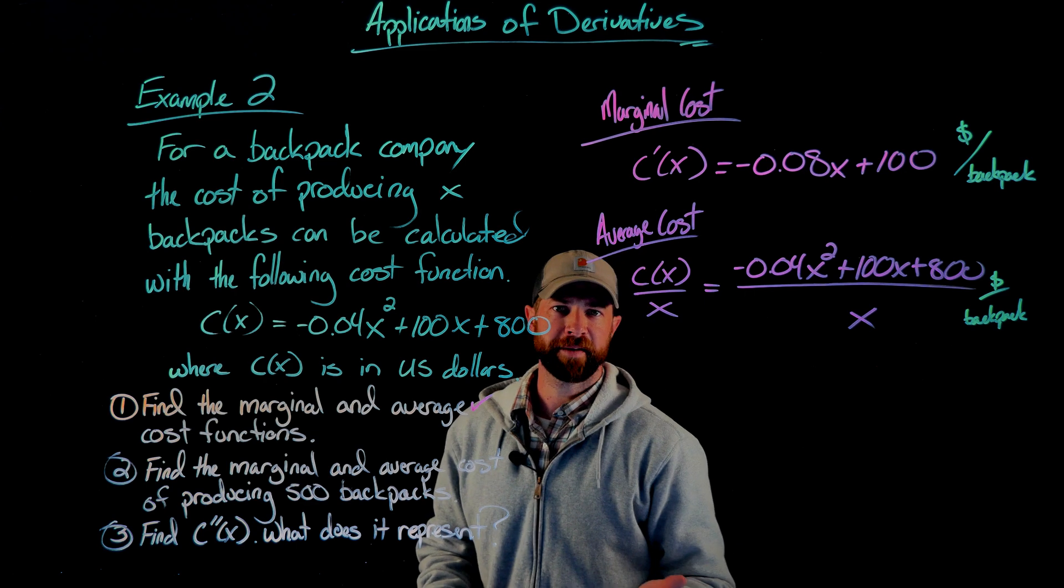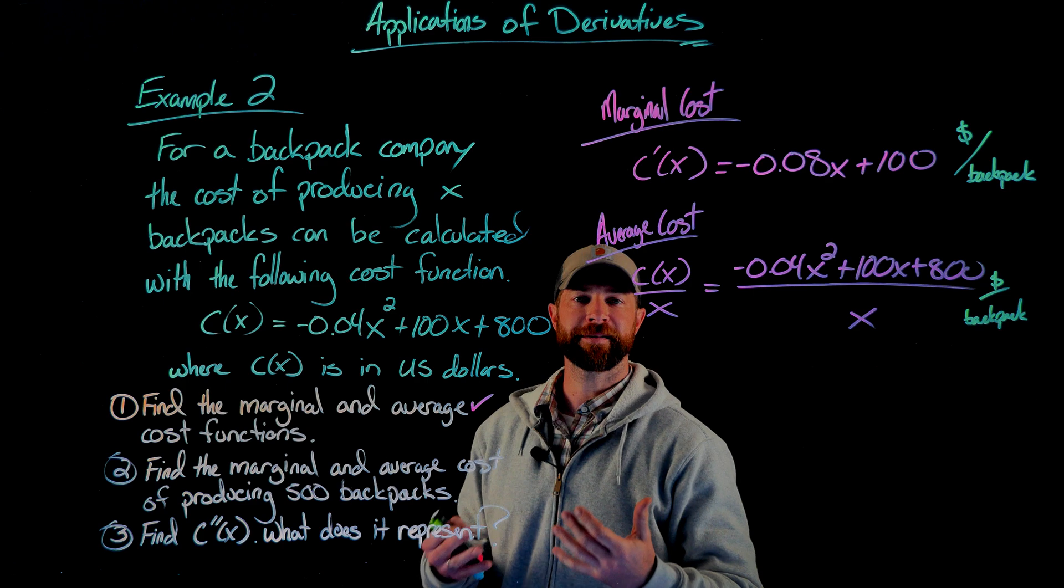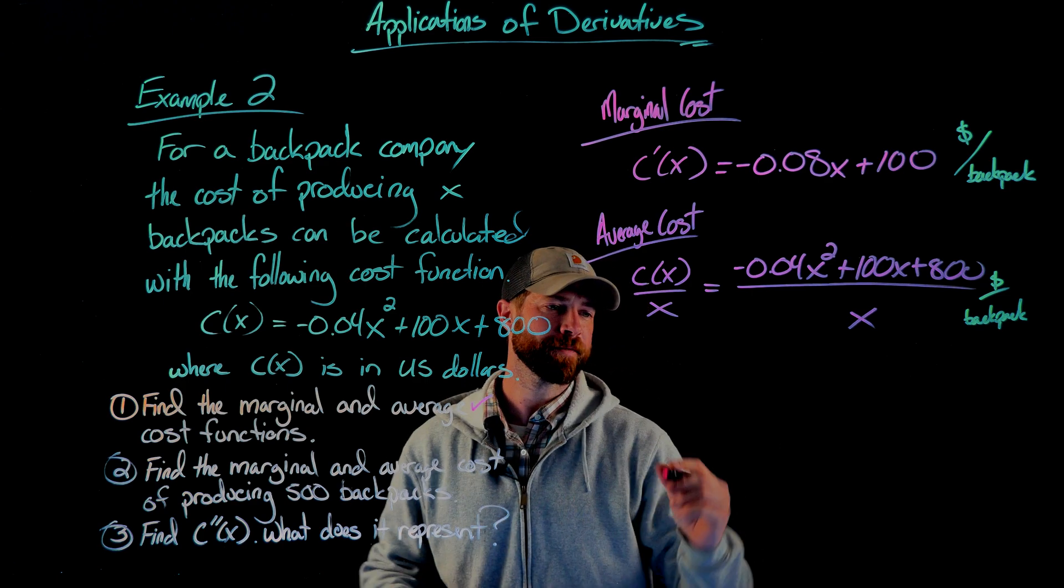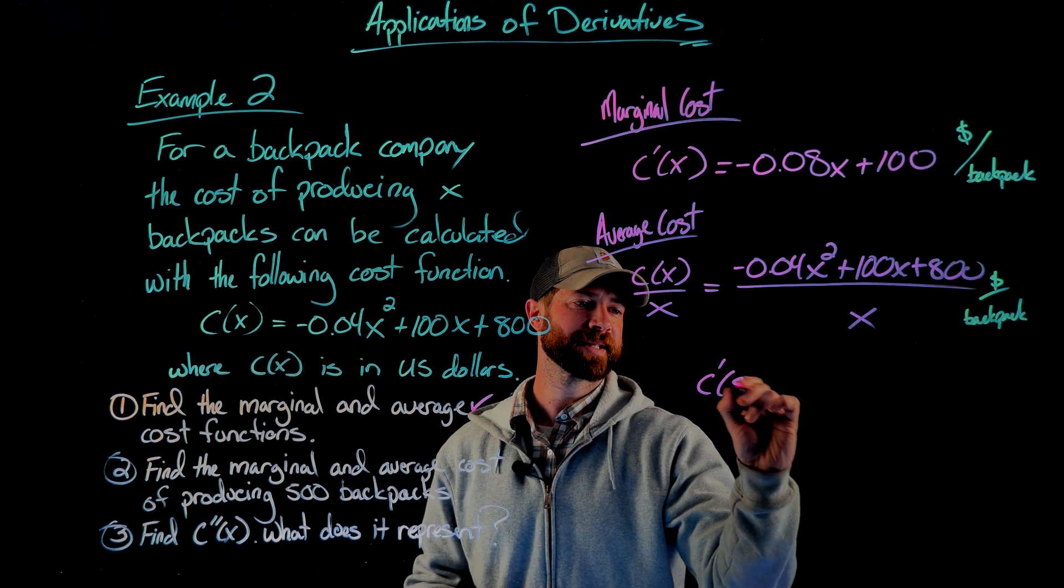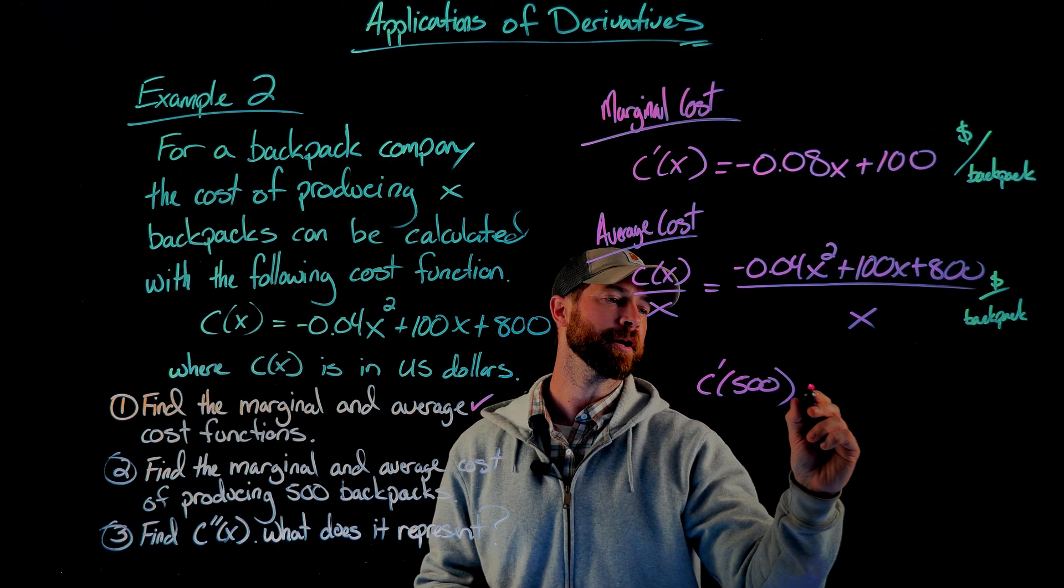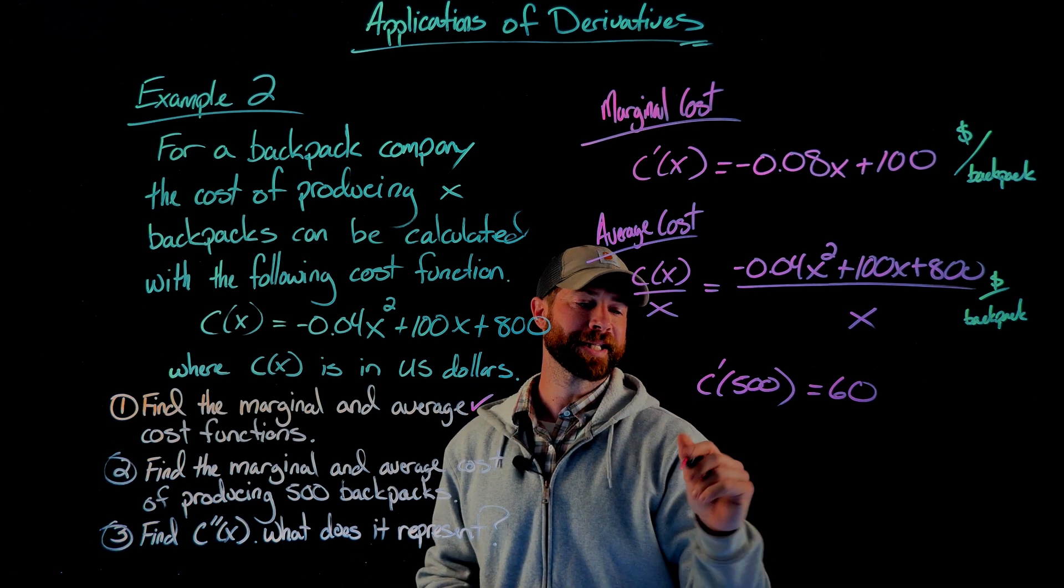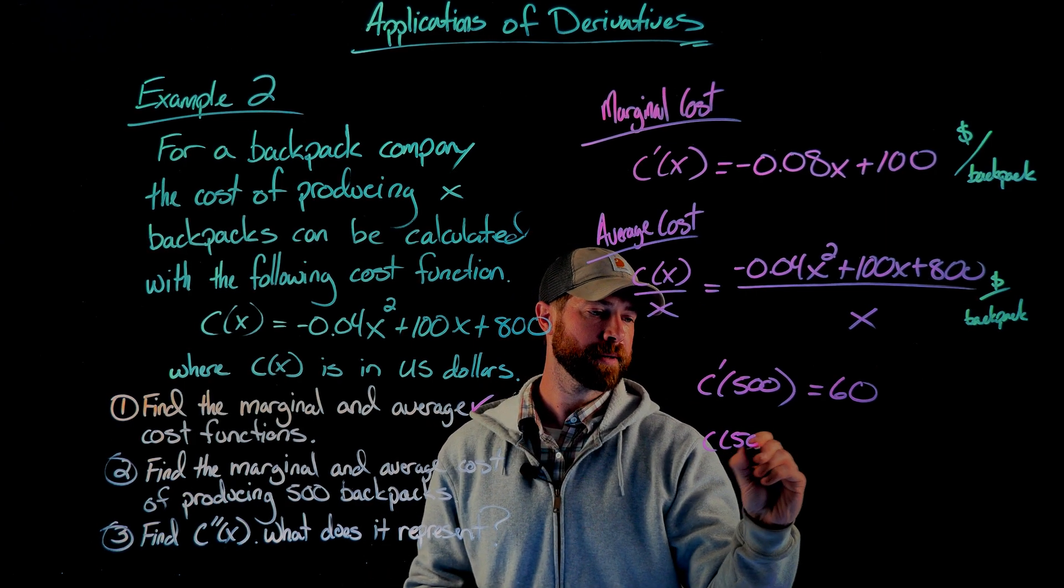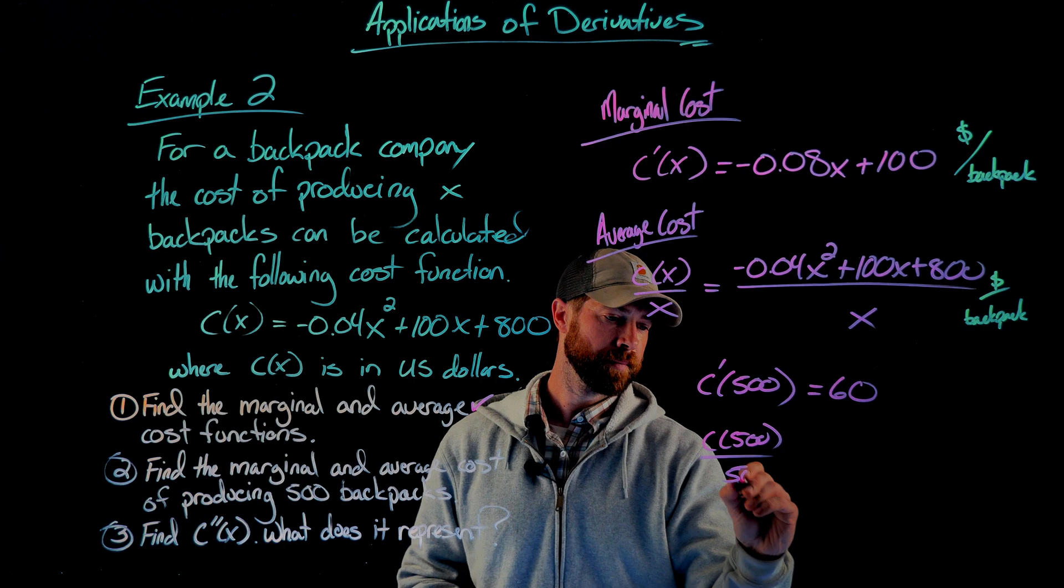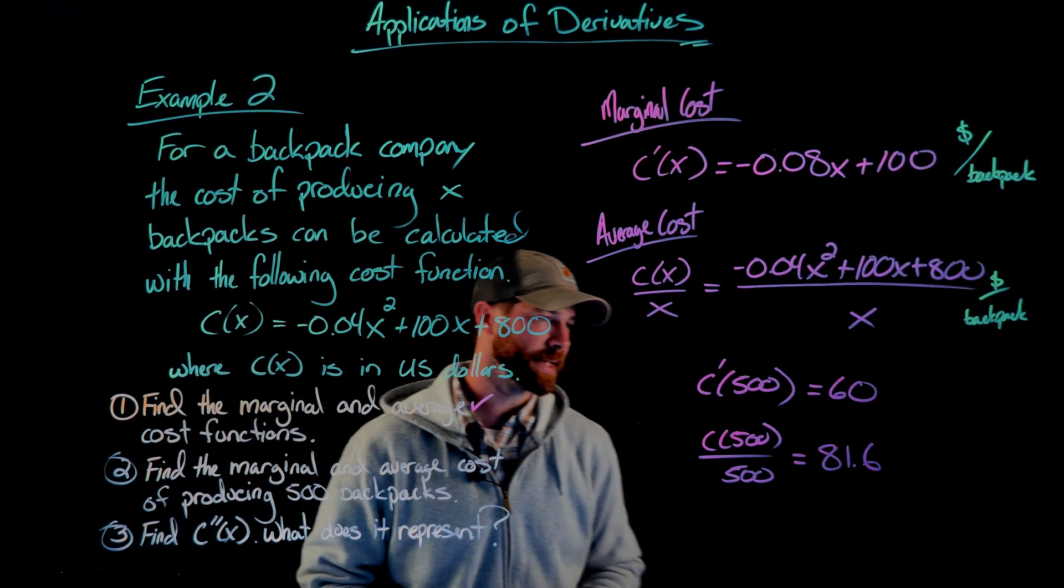We're simply being asked to calculate for both of these functions we've just found what happens at 500 backpacks. For the marginal cost, we would have C'(500). If we plug 500 into this function, it gives us 60. If we plug 500 into the average cost function, we end up with 81.6.